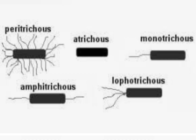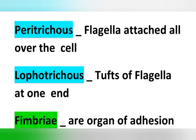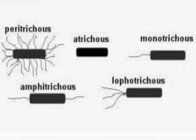Peritrichous means flagella are attached all over the body. Lophotrichous means a tuft of flagella at one end. In the picture, we can see peritrichous bacteria have flagella all over the body, while lophotrichous bacteria have a tuft of flagella at one end.